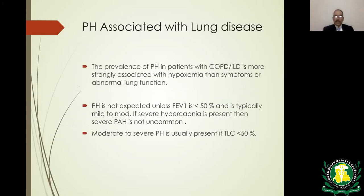Pulmonary hypertension associated with lung disease is again due to hypoxia. In COPD and ILD, it is more strongly associated with hypoxia rather than symptoms, and is not expected unless FEV1 is less than 50 percent. It is typically mild to moderate, though moderate to severe hypercapnia may be associated with more severe disease. In restrictive lung disease, PAH tends to be moderate to severe and does not develop until total lung capacity is less than 50 percent.